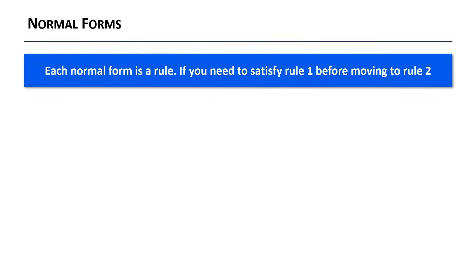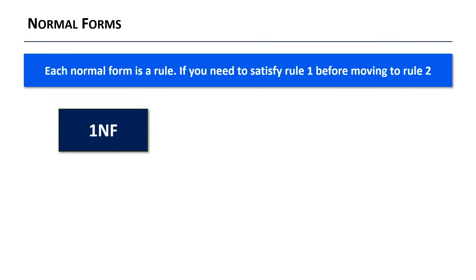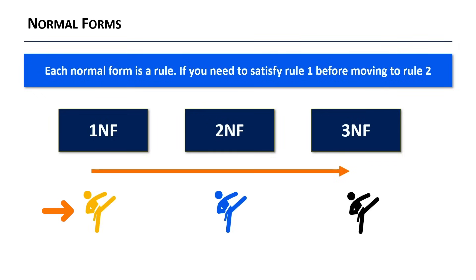We use a set of guidelines known as normal forms, and you need to satisfy rule one before moving on to rule two. If the first rule is observed, the data is said to be in first normal form, then second normal form, and finally third normal form. The higher the number, the better. As an analogy, think of martial arts: 1NF is like a yellow belt, 2NF is a blue belt, and 3NF is a black belt. The higher the rank, the lower the risk of error.